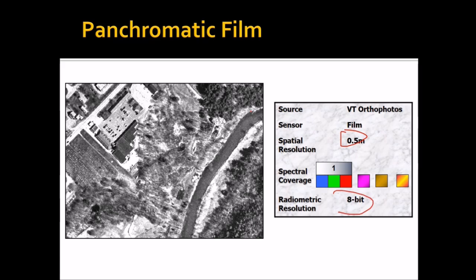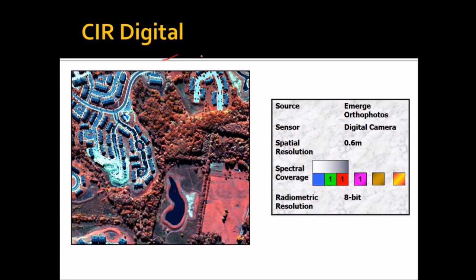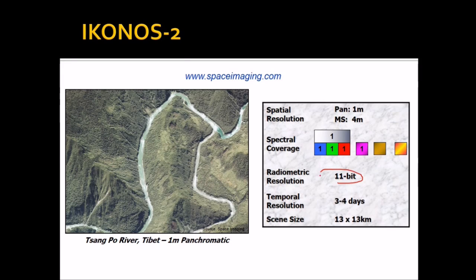IKONOS 2 has 11-bit radiometric resolution, same as IKONOS, with a 13 by 13 kilometre product. The pan resolution is 1 metre and multispectral image is also available — somewhat similar to its predecessor IKONOS 1.